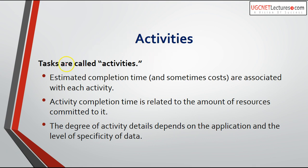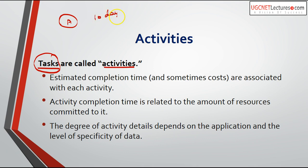Tasks required to complete a project are called activities. Each activity has an estimated completion time associated with it. The completion time is related to the amount of resources committed to that activity — fewer resources means more time, more resources means less time. For example, if activity A requires 10 days to complete with two people, increasing the number of people will decrease the completion time.